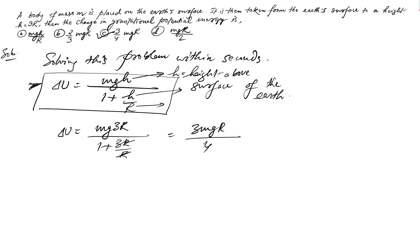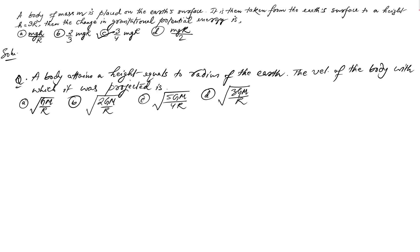This formula is very handy for finding change in potential energy. It can also be used to find the velocity with which you throw a particle so that it reaches a certain height. Let me give you a problem to explain that. Look at this question: a body attains a height equal to the radius of the Earth — find the velocity with which the body was projected.